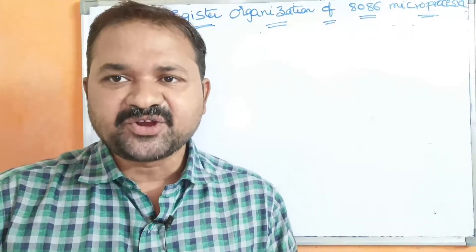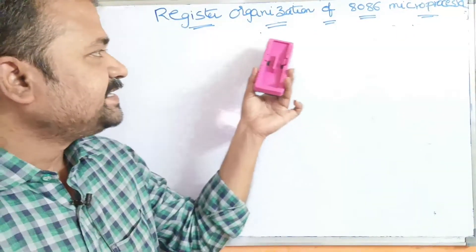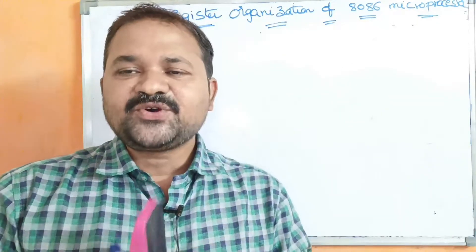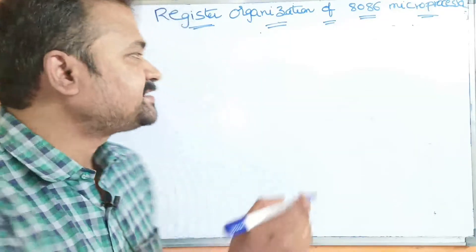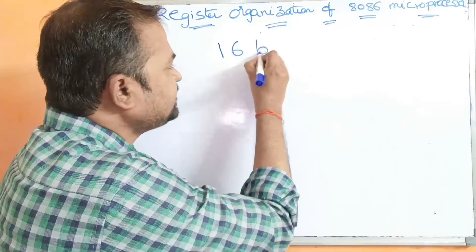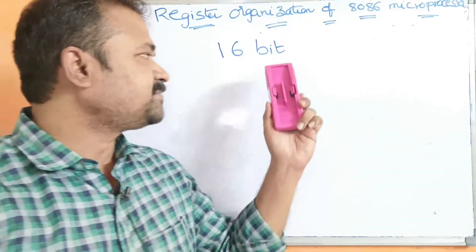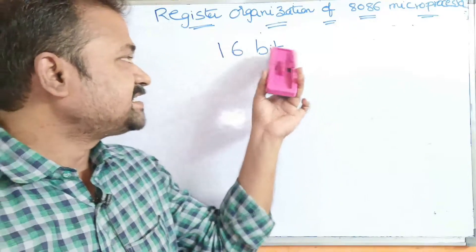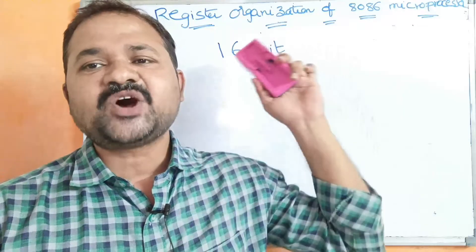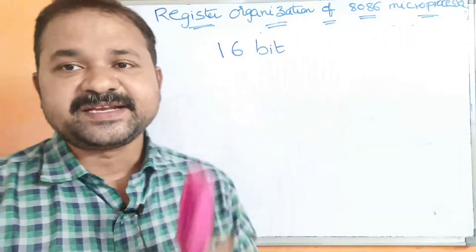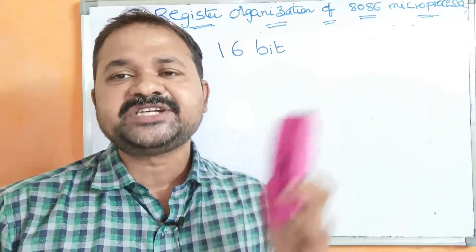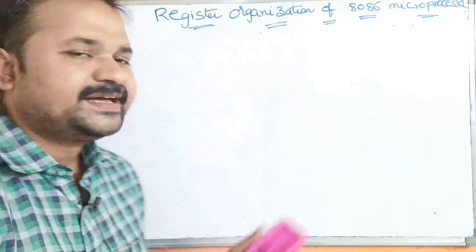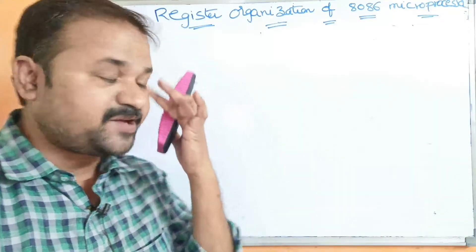In this video, we are going to discuss register organization of the 8086 microprocessor. We know that 8086 is a 16-bit microprocessor, which means the microprocessor performs operations on 16-bit data. So the size of each register in the 8086 microprocessor is 16 bits. Now let us see the various types of registers in the 8086 microprocessor.